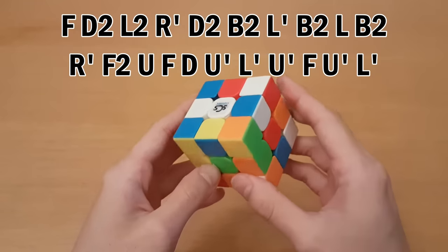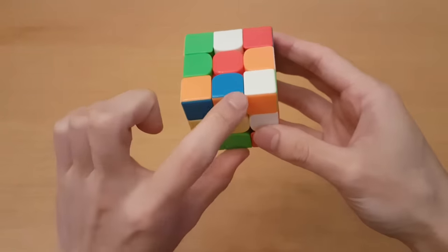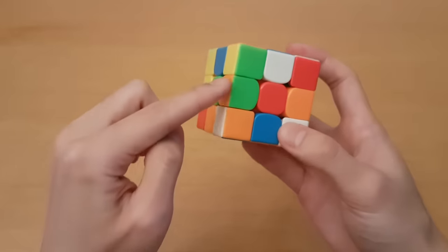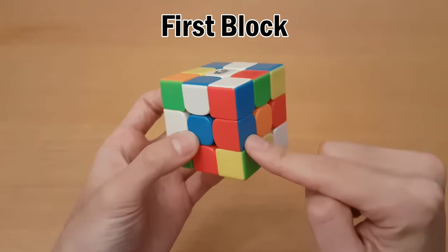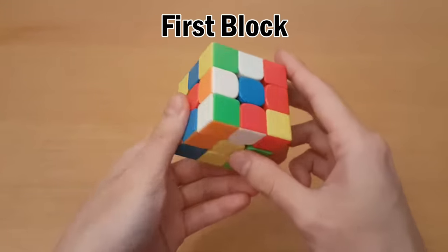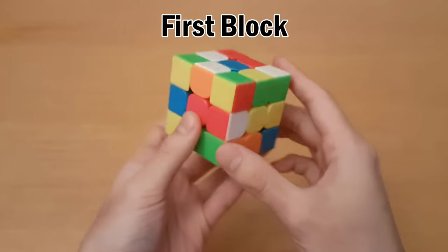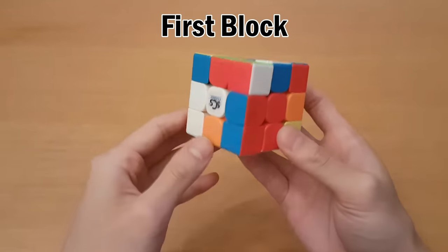So with white top and green front, here's the scramble I'm using. The first step in Roux is to make all of F2L, but without the front and back cross edges. So you essentially have like a big block over here and a big block over here. So what I'm going to do here is start by pairing up this blue and red, and then I'm going to add the red white piece to it, which is over here. So I'm going to move this over here, move this down, and connect this one to it like that.